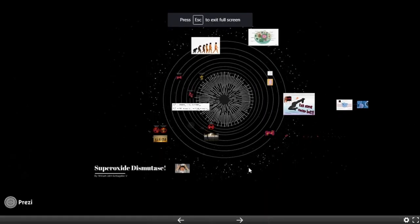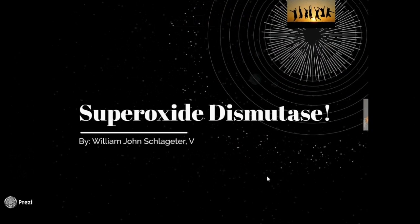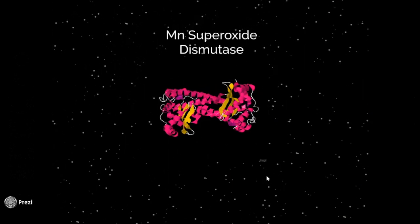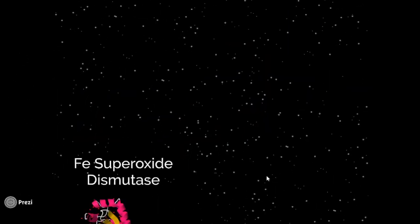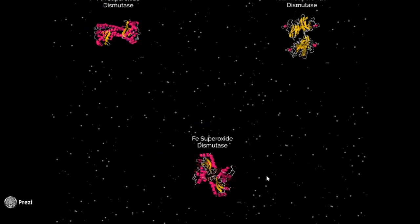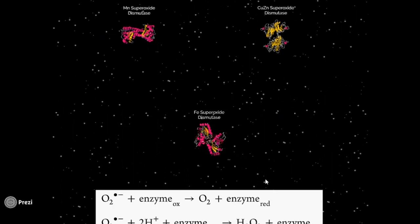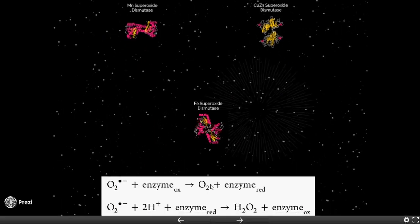Hi guys my name is William Schlagerter and I'm going to talk about superoxide dismutase. This is superoxide dismutase and so is this and so is this. All three of these enzymes take two superoxide radicals and change them via a metal mediated dismutase reaction into hydrogen peroxide and normal diatomic oxygen.